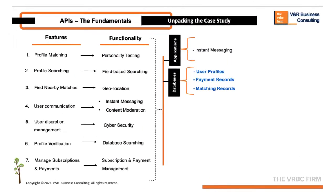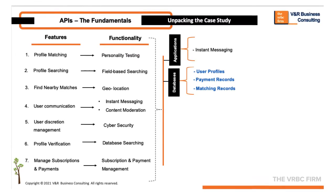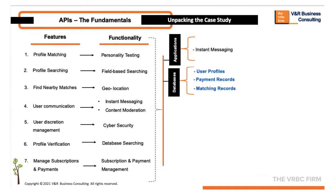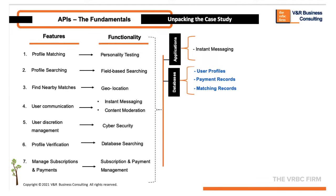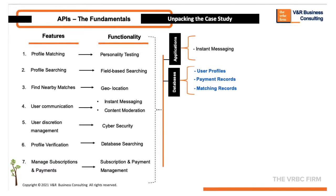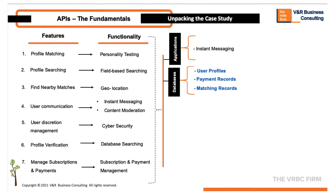It can be quite a put-off for users to be continuously matched with people they've matched with before and it didn't work out, particularly if rejection was involved on either side. So we create a database to store previous matches to ensure that when users come back to search again, we eliminate the previous match from new searches or matched results.